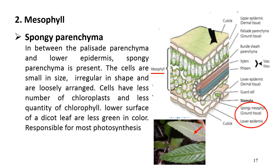In between the palisade parenchyma and lower epidermis, spongy parenchyma is present. The cells of spongy parenchyma are small in size and irregular in shape. They are loosely arranged with a lot of large intercellular space between them. The cells of spongy parenchyma contain fewer chloroplasts and have less quantity of chlorophyll.